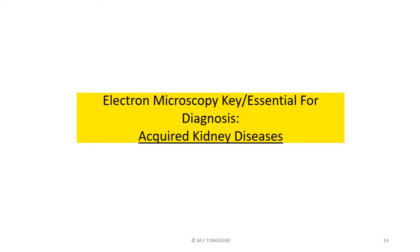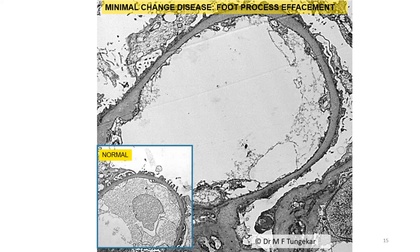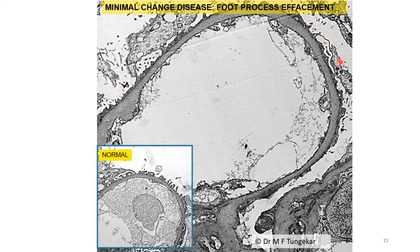In many acquired kidney diseases, EM may be a key or essential investigation. As the first example of an acquired disease where EM is essential for diagnosis, I will start with minimal change disease. In this condition, light microscopy and immunofluorescence microscopy of the kidney biopsy may show no lesion — that's why the name is minimal change disease, or normal light microscopy. EM provides the only clue to the diagnosis by showing diffuse effacement of foot processes of podocytes. Here is a normal capillary loop showing distinct, preserved foot processes, which are not seen in the affected case because they are effaced. Without EM, diagnosis is not possible. Minimal change disease may be superimposed on other renal diseases, as we shall see.